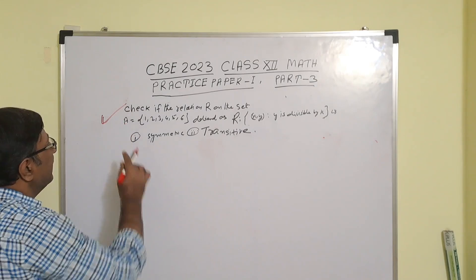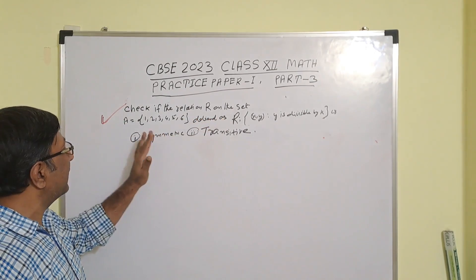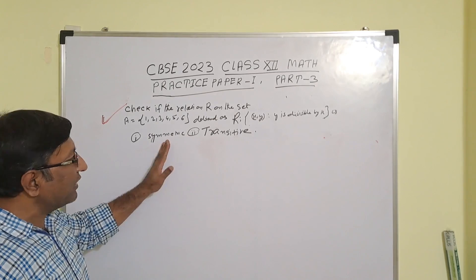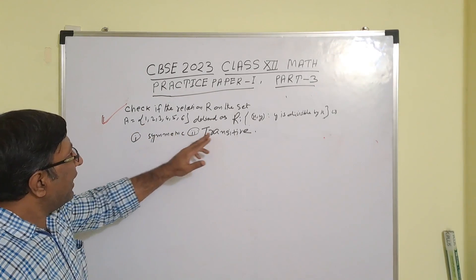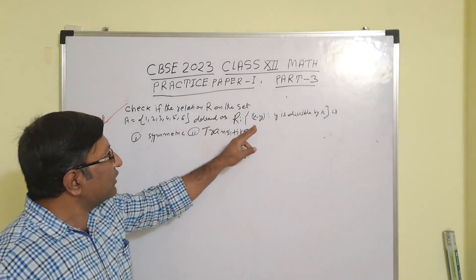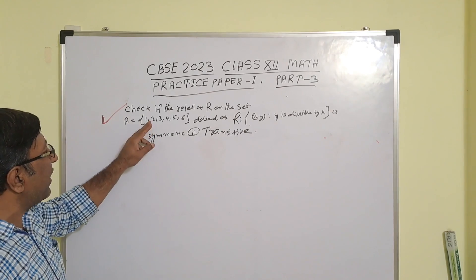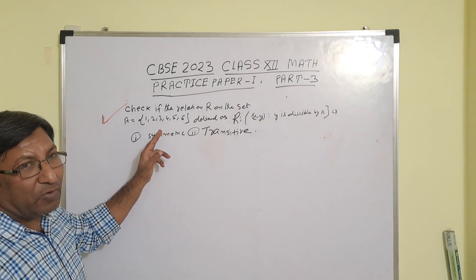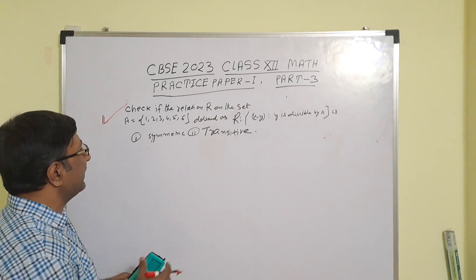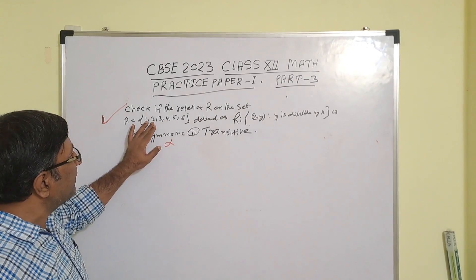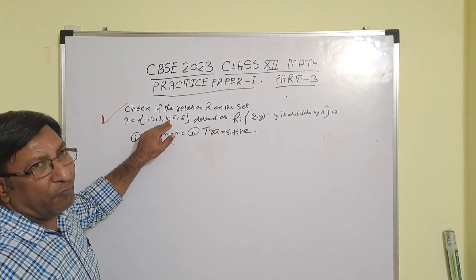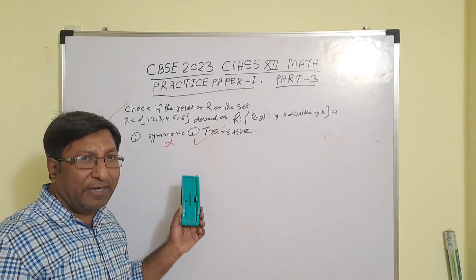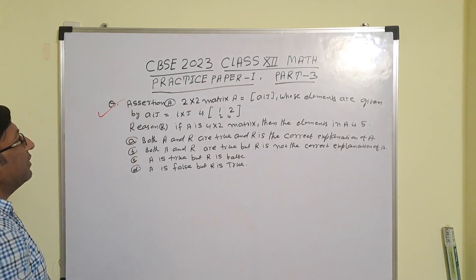Check if the relation R on set A, defined as xRy where y is divisible by x, is symmetric or transitive. For symmetry: (1,2) means 2 is divisible by 1, but (2,1) is not valid since 1 is not divisible by 2. So it is not symmetric. For transitivity: if (1,2) and (2,4), then 4 is divisible by 1, so (1,4) holds. So the relation is transitive but not symmetric.